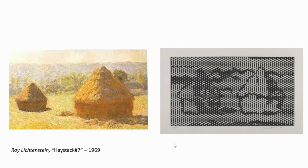He did the same with the Haystacks — Monet's famous Haystack series. This is Lichtenstein's Haystack Seven, and there's obviously a series of these in blue, red, and other colours. Again, the irony is it's a series of work about a series of work.